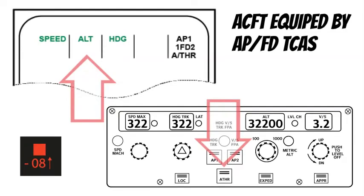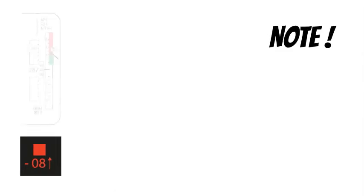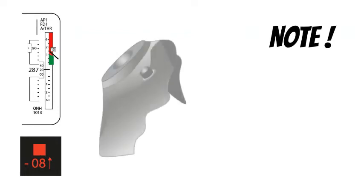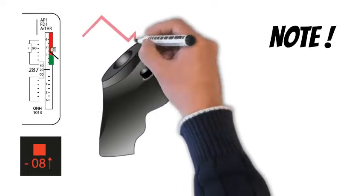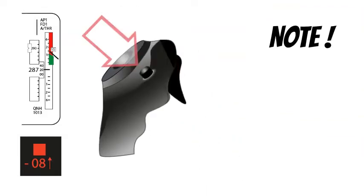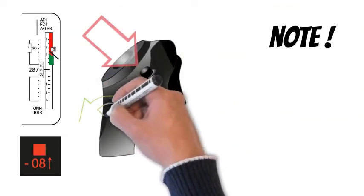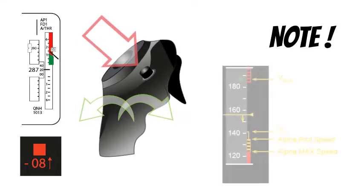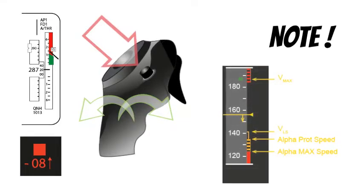If the Autopilot is not engaged, the PF smoothly and firmly flies the Flight Director pitch bar. The Flight Director's orders guide the aircraft following the RA orders. The PF can ask the PM to engage the Autopilot. Suppose, for any reason during an RA, the aircraft does not reach the green area of the vertical speed scale. In that case, the pilot flying should disconnect the Autopilot and override the Flight Director's orders to lead the aircraft out of the red area of the vertical speed scale. The pilot flying must use the entire speed range between V-alpha max and V-max if necessary.